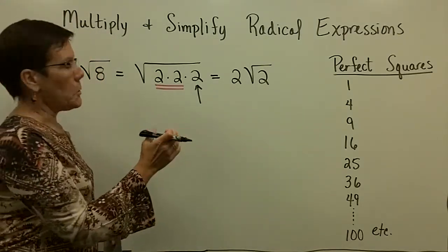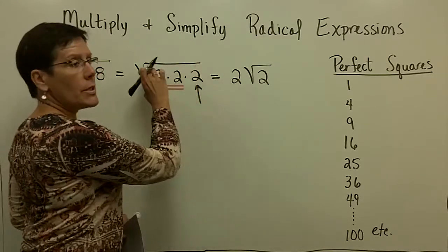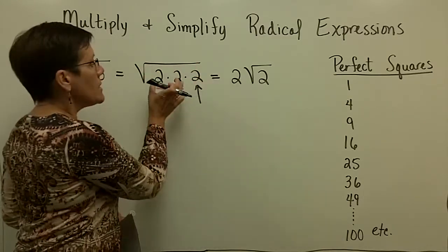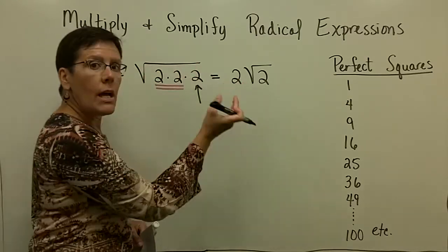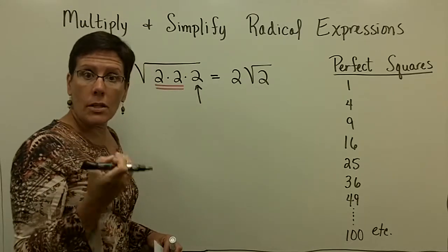So this is one approach. Write the number into its prime factors, and then take pairs out from under the radical, and look at those as integers.